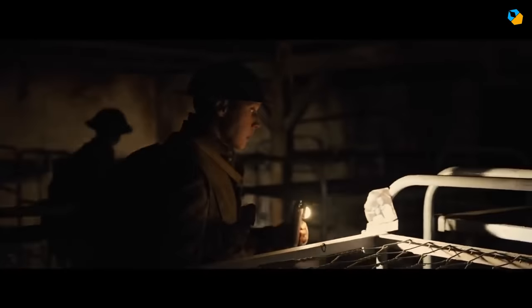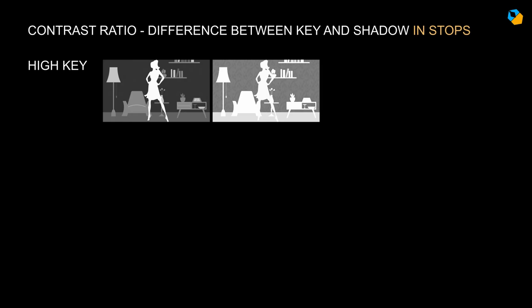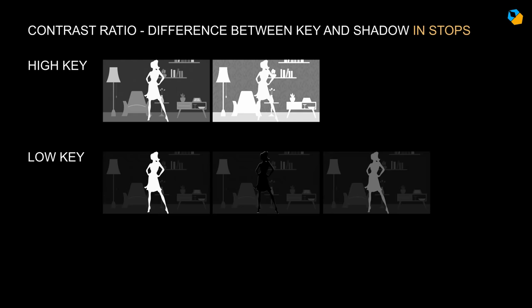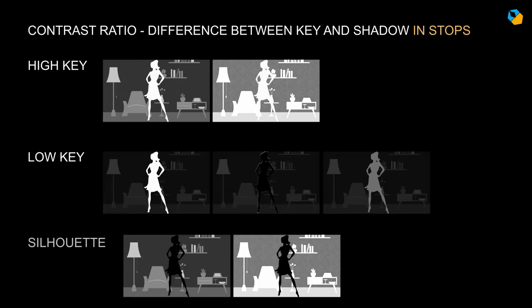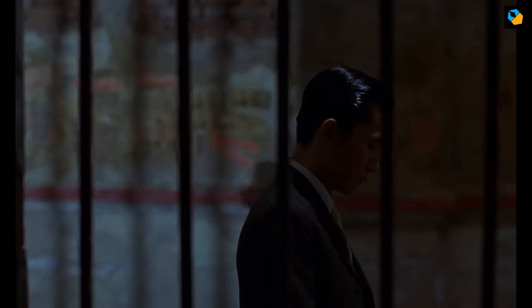To wrap it up: contrast ratio is the difference in stops between the key and the shadow. High key is when the background either matches the foreground in correct exposure or if the background is overexposed. Low key is when the background is underexposed or black, regardless of what the subject looks like. The silhouette is a special case where the background is correctly exposed or overexposed but the foreground is underexposed or black. Everything else is normal lighting — the kind that doesn't contribute a lot to manipulating the mood.